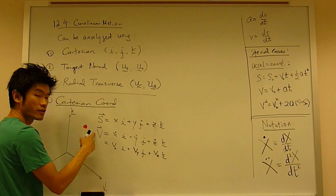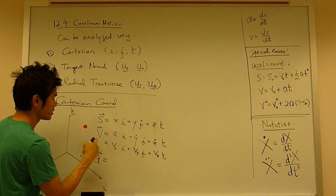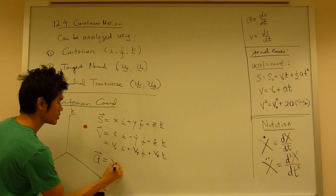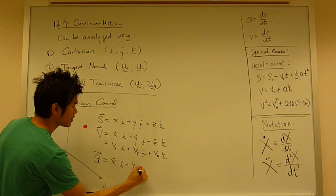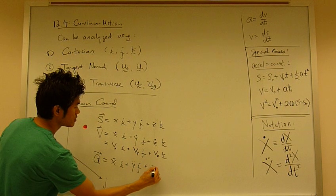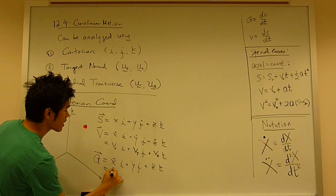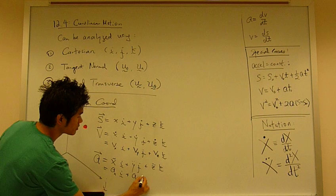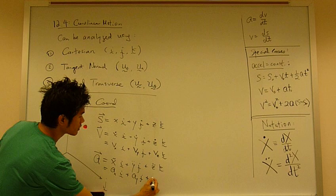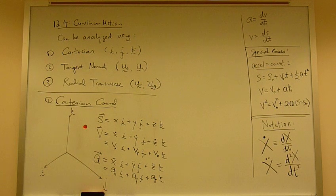And take the derivative further, one more time, you can get the acceleration of this particle, which is x-double-dot i, plus y-double-dot j, plus z-double-dot k. And x-double-dot is exactly the x-component of acceleration, y-double-dot is the y-component of acceleration, and z-double-dot is the z-component of acceleration.